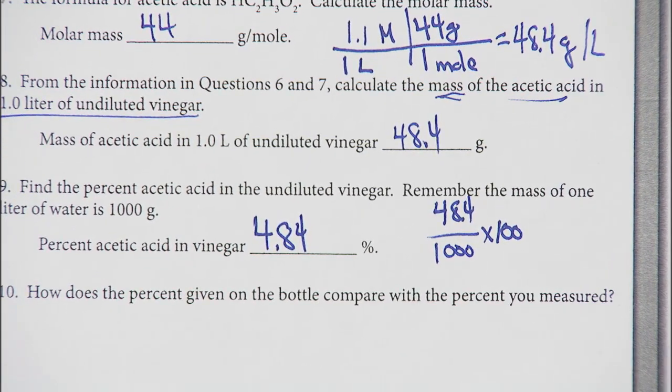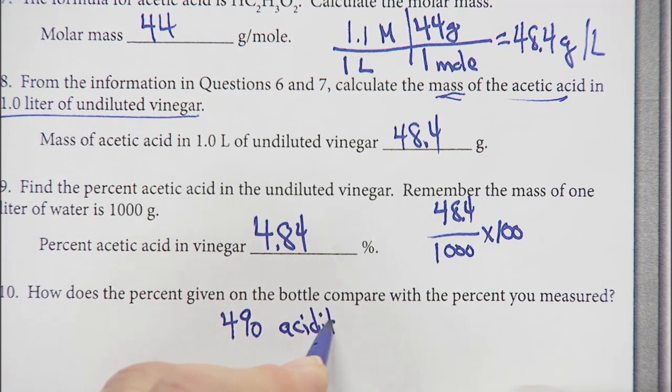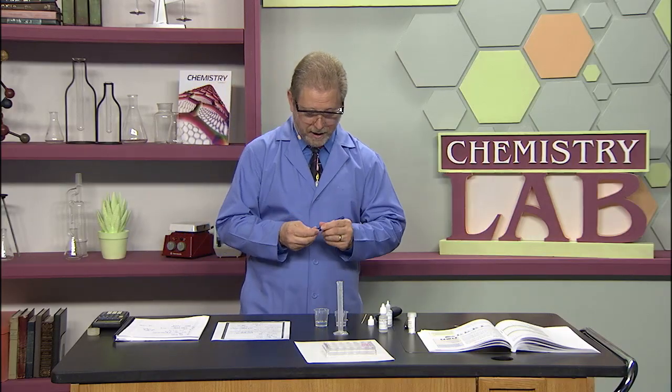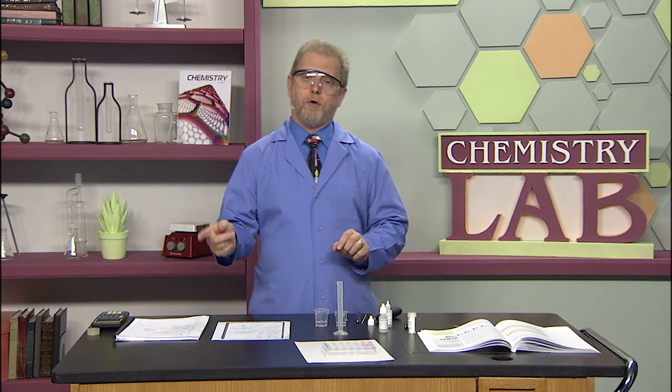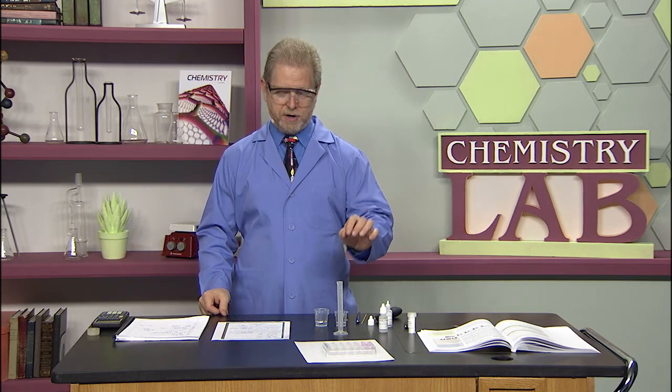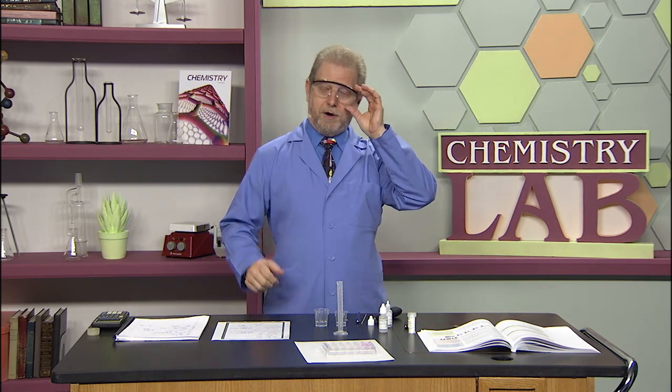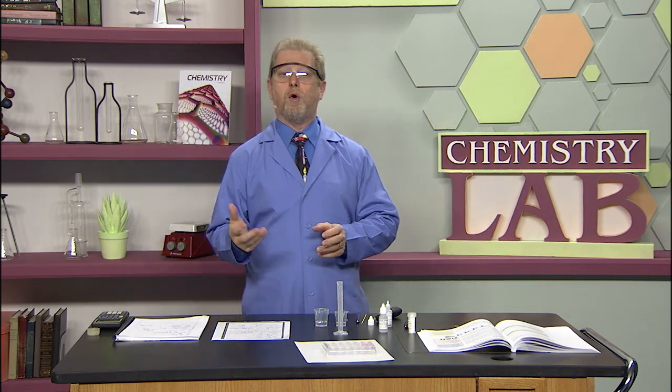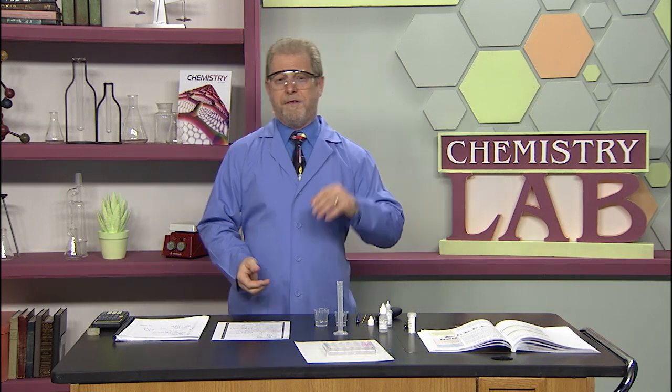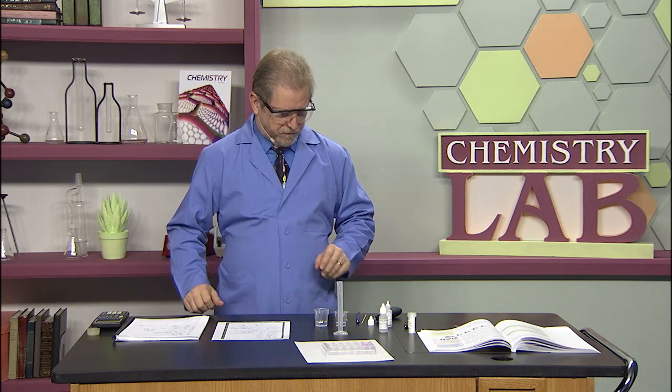The bottle of vinegar that I had said 4 percent acidity. So what must have happened, because the 4.84 is higher than the 4, I must have added a little bit too much vinegar to the well plate. That would generate an artificially high, about 20 percent error. The other time I got about 10 percent error, but when I practiced this before doing it...